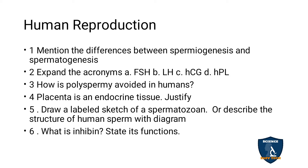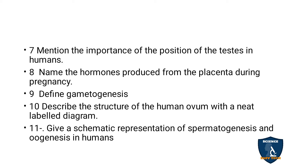How is polyspermy avoided in humans? Justify that placenta is an endocrine tissue. What is inhibin — state its function (3 marks). Mention the importance of the position of the testis in humans. Name the hormones produced from the placenta during pregnancy.